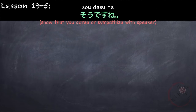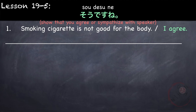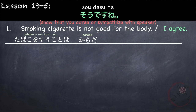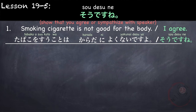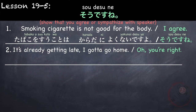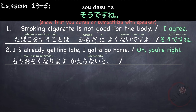And lastly, the phrase sou desu ne. We've encountered this before. This phrase shows that you agree or sympathize with the speaker. For example, the speaker says: smoking cigarettes is not good for the body. Tabako suu koto wa karada ni yokunai desu yo. You say I agree: sou desu ne. Or: it's already getting late, I gotta go home. Oh, you're right. Mou osoku narimashita. Kaeranai to — or kaeranai to ikemasen — or kaeranakereba narimasen. Ah, sou desu ne.